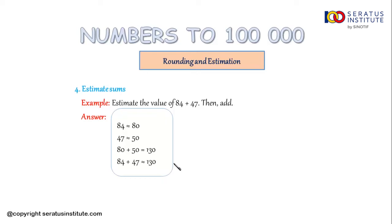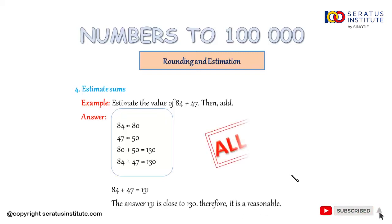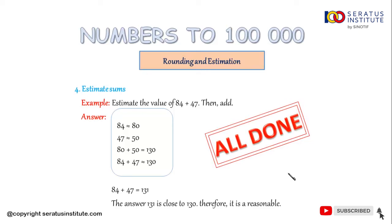If you want to check whether your answer is correct, you can check it manually. So 84 plus 47 equals 131. The answer 131 is close to 130, therefore it is reasonable. All done for the fourth main point.